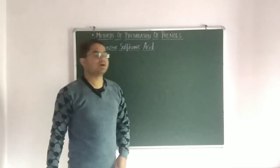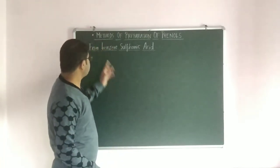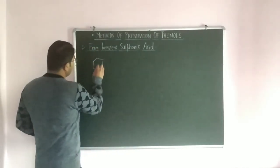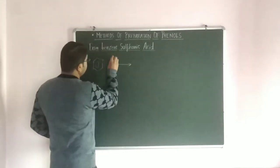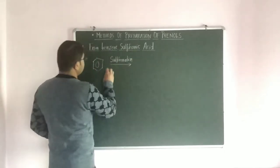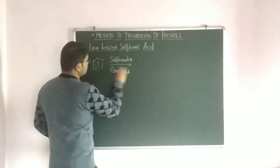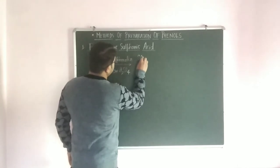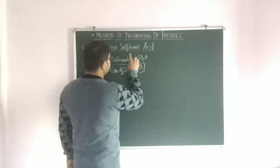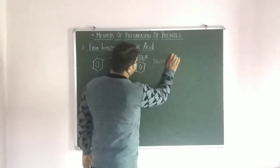Hello students, today I will tell you about the preparation method of phenols. The very first method is from benzene sulfonic acid. First, how benzene sulfonic acid is formed — when benzene gets sulfonated, that is sulfonation of benzene, which takes place in the presence of concentrated sulfuric acid (H2SO4). Sulfonation of benzene gives SO3H on the ring, that is benzene sulfonic acid.